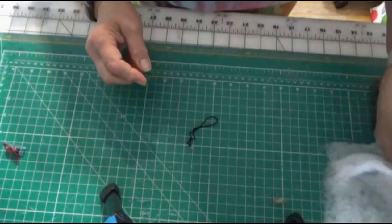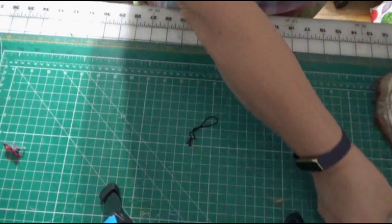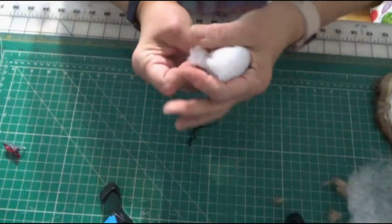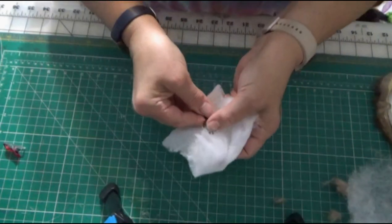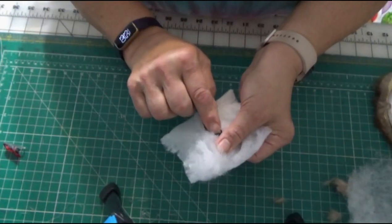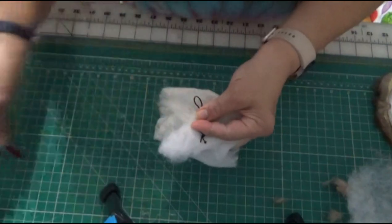So I take a piece of polyfill, scrunch it up, and I'm going to put it on the inside. And right here is where I'm going to start the stitches.